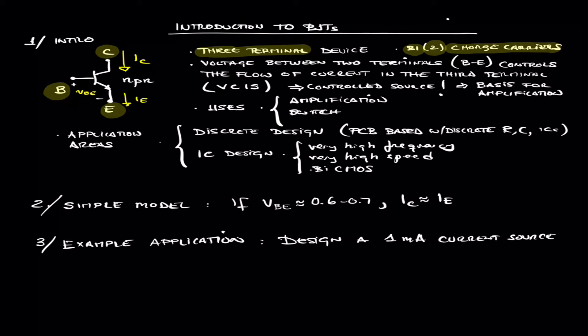Like all transistors, the principle of operation is that the voltage between two terminals, in this case the voltage between the base and the emitter terminal, is going to control the flow of current in the third terminal.